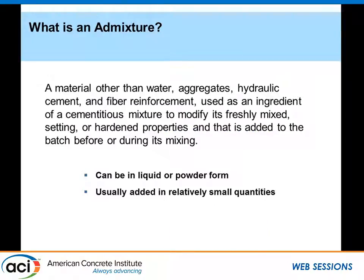Before we get going, the key question is: what is an admixture? The new E-4-12 document is trying to change the previous definition because it tells us what it is not. The definition basically says it's a material other than water, aggregates, hydraulic cement, and fiber reinforcement that's used as an ingredient of a cementitious mixture to modify its freshly mixed, setting, or hardening properties, and that is added to the batch before or during its mixing.